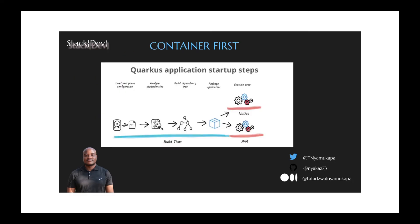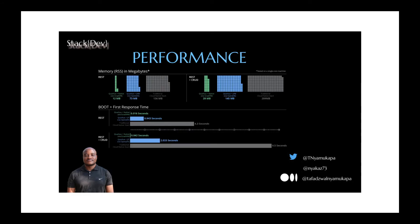Just to give you a picture of how this works — this image is from the Quarkus website. During build time, Quarkus is building the native executables or the JVMs. That's when it compiles the classes and does all the processing. Then during runtime, that's when you run your business logic. At the end of the day, it gives you an application with a low memory footprint, which means you won't require much memory, and it also massively improves the startup time of the application.